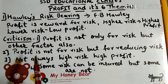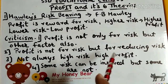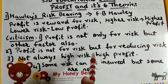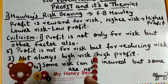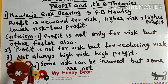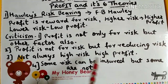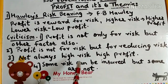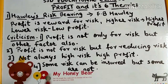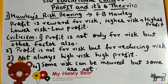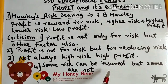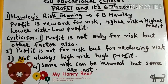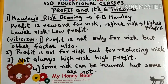Further criticisms: profit is not only for risk but for reducing risk. Also, higher risk does not always mean higher profit — sometimes high risk can lead to low profit or even losses. Additionally, some risks can be insured through an insurance company, but not all risks can be insured.